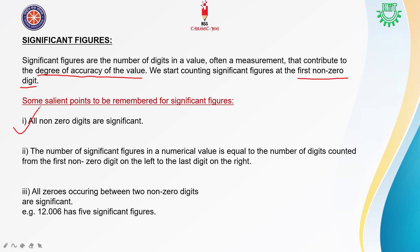So for this, we divide the digits into two parts: one is zero, and the other is 1 to 9. If there is any digit from 1 to 9, without any doubt we will consider it a significant digit. Zero, however, is sometimes significant and sometimes not. When it is and when it isn't, we will see some rules.